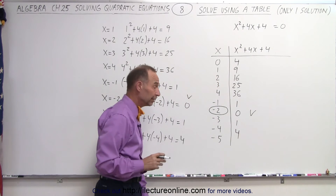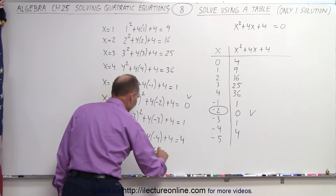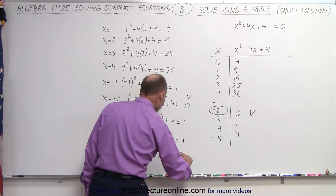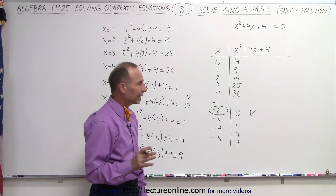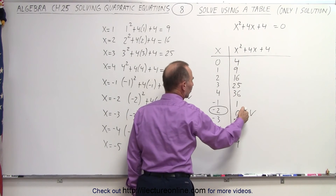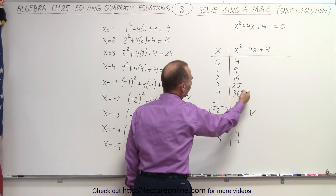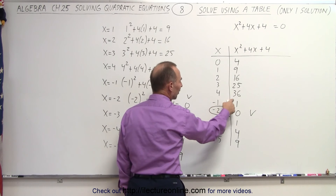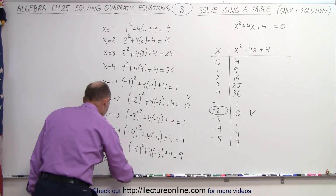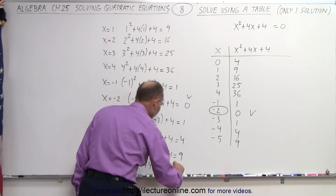It looks like the numbers are beginning to get bigger. x equals negative 5: that's negative 5 squared plus 4 times negative 5 plus 4, which is 25 minus 20 plus 4, equal to 9. And notice what's happening — the numbers are getting bigger and bigger, farther away from zero. x equals negative 6: negative 6 squared plus 4 times negative 6 plus 4 is 36 minus 24 plus 4, which equals 16. So at negative 6 we get 16.